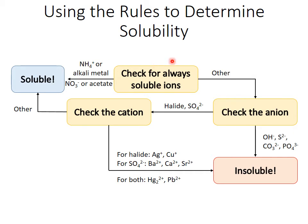But if you have other things, the first place you should check is the anion. If the anion is hydroxide, sulfide, carbonate, or phosphate, then it is always insoluble. Any compounds featuring these anions and not ammonium or alkali metal cations are always insoluble.